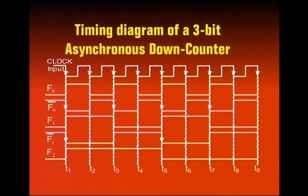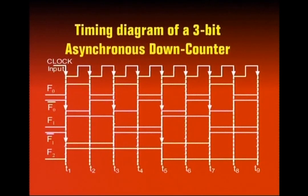This F0-bar signal is connected to the clock input of the second flip-flop. So on the high-to-low transition of F0-bar at T1, the second flip-flop also triggers — since its J-K inputs are tied to 1, it also toggles. Similarly, the third flip-flop has F1-bar connected to its clock input. Because F1-bar had a high-to-low transition, the third flip-flop also toggles, going from state 0 to 1.